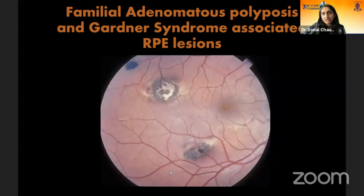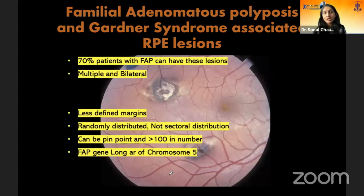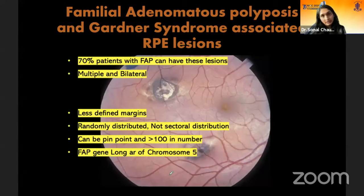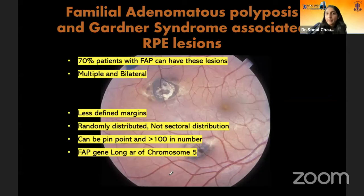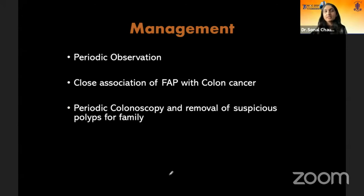The familial adenomatous polyposis (FAP) associated or Gardner syndrome associated RPE lesions are important — these are hallmarks of a systemic association. Patients with FAP are at higher risk of developing colonic cancers. 70% of patients with FAP can have typical CHRPEs in the eyes, which as easily recognizable lesions can be a clue towards the patient's diagnosis of a systemic illness. These tend to be multiple and often bilateral, with less defined margins and random rather than sectoral distribution. The FAP gene has been identified on the long arm of chromosome 5. Periodic observation of these lesions and periodic colonoscopy with removal of suspicious polyps in the patient and family is warranted.